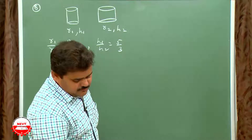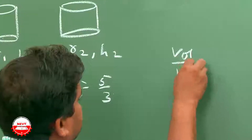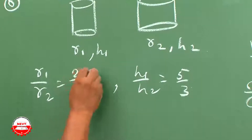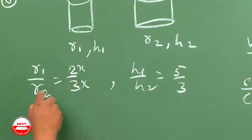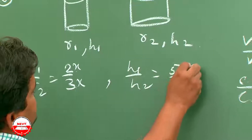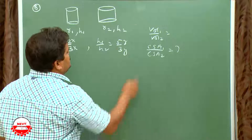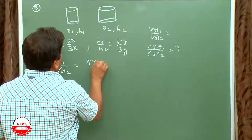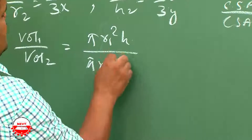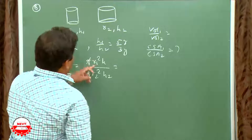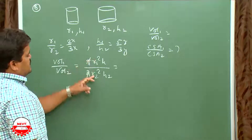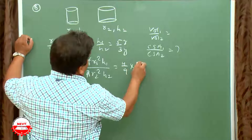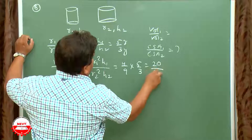Let R1 = 2x, R2 = 3x, H1 = 5y, H2 = 3y. Volume1/Volume2 = πR1²H1 / πR2²H2 = (R1/R2)² × (H1/H2) = (4/9) × (5/3) = 20/27.